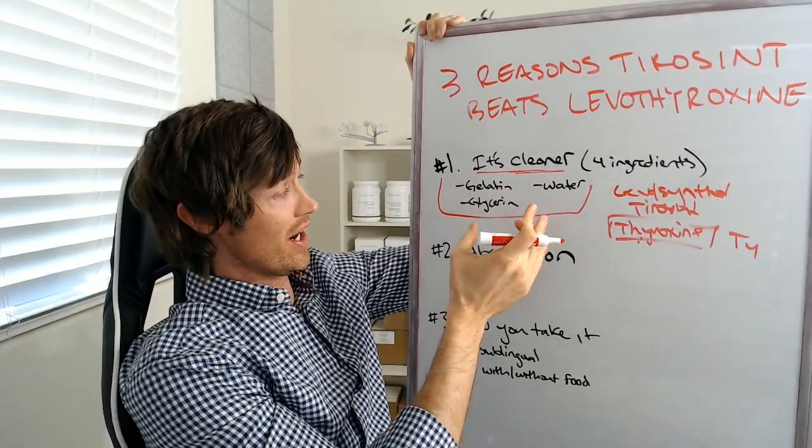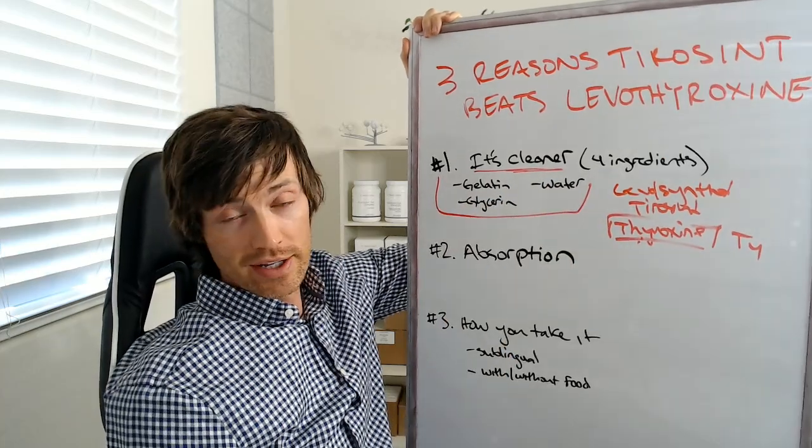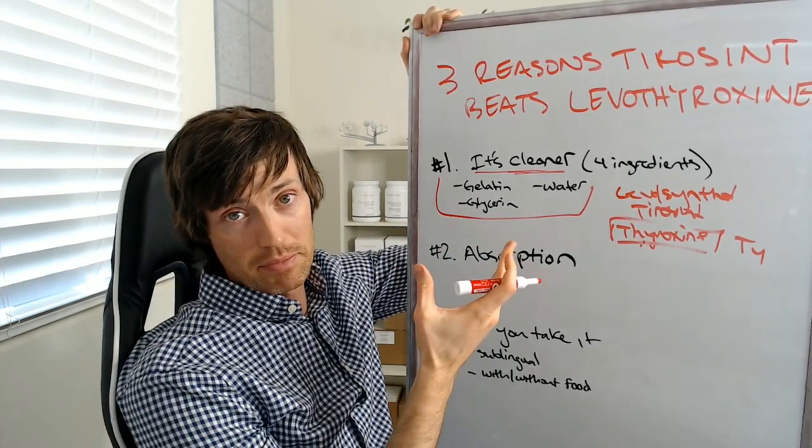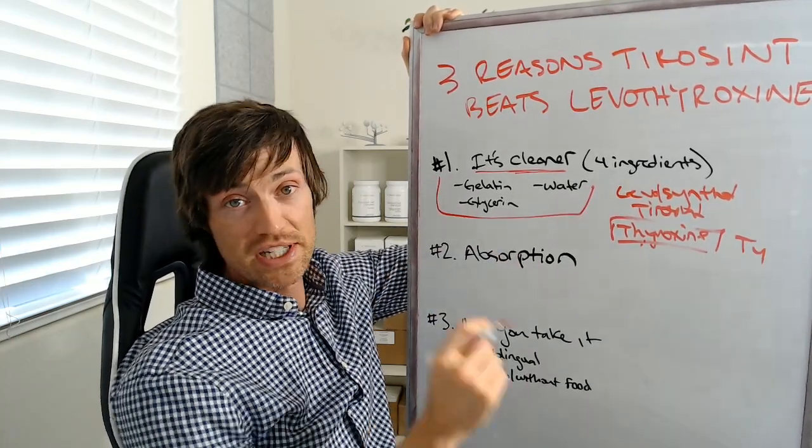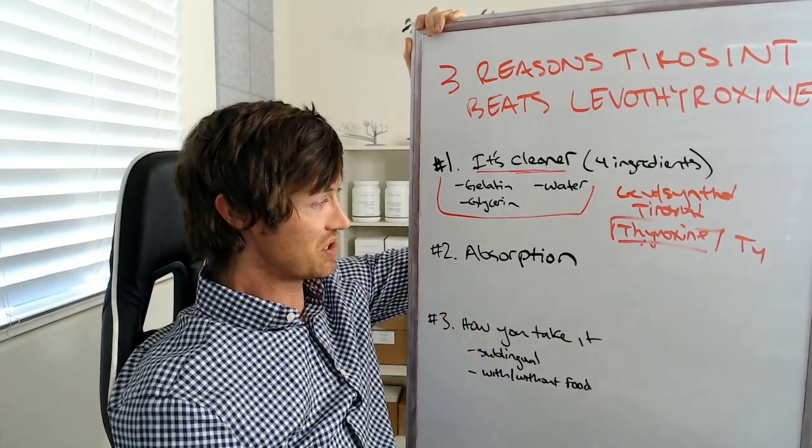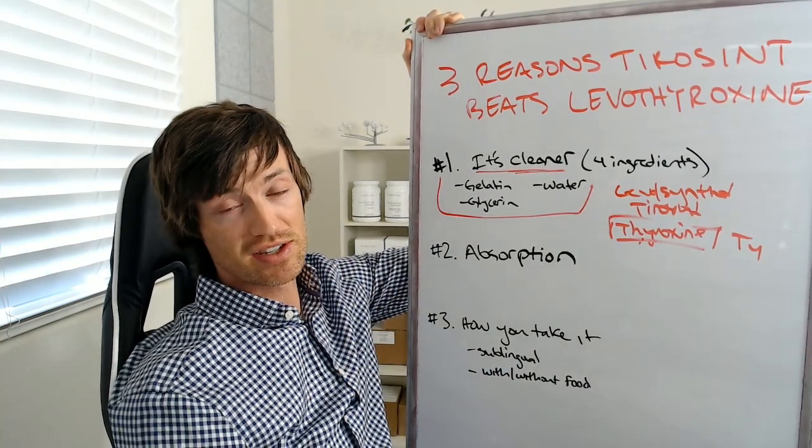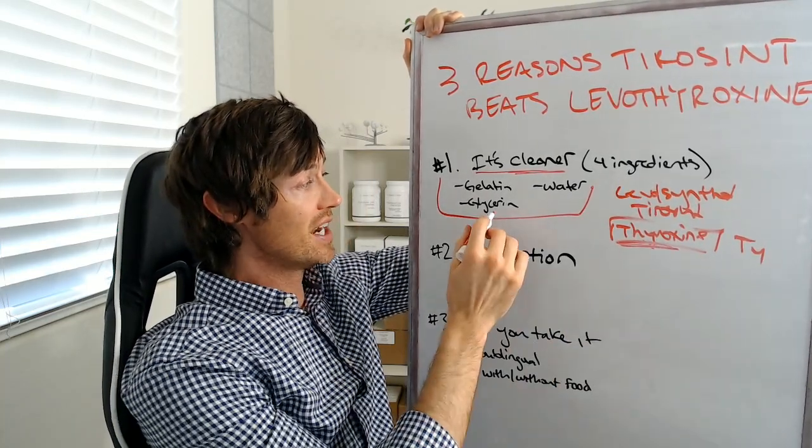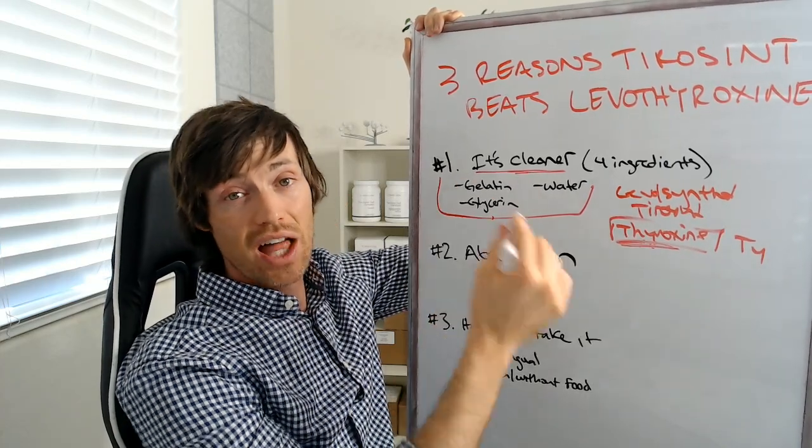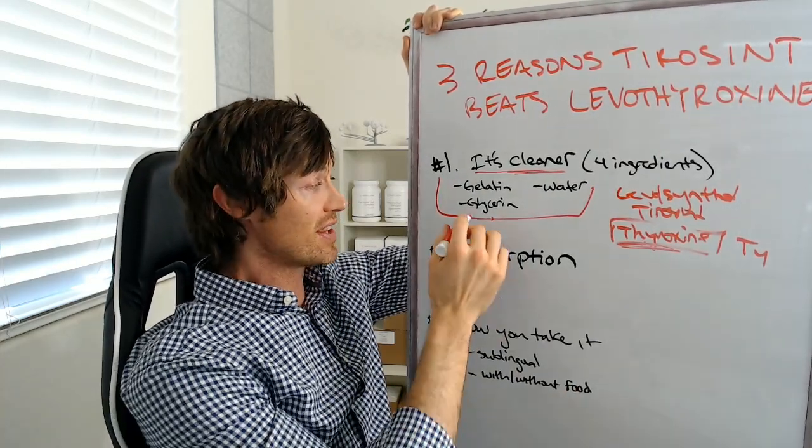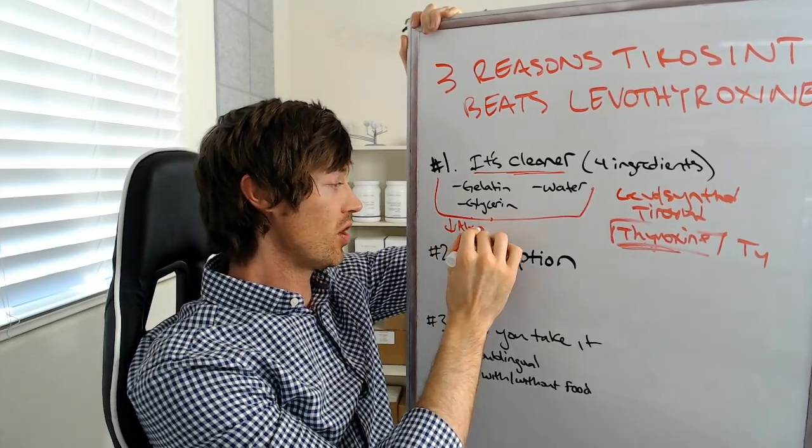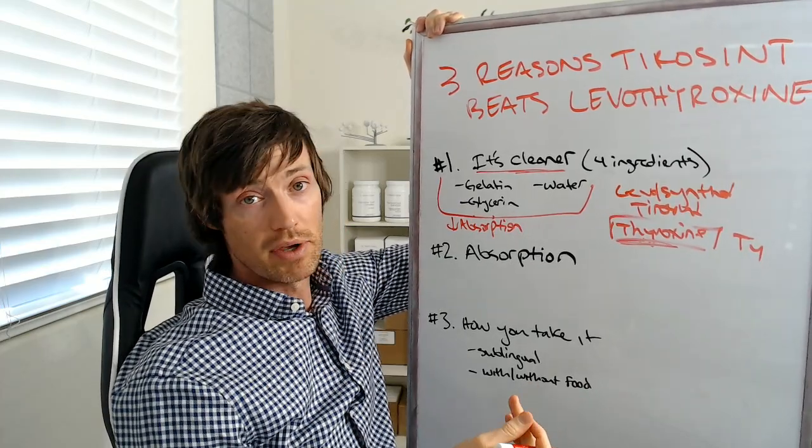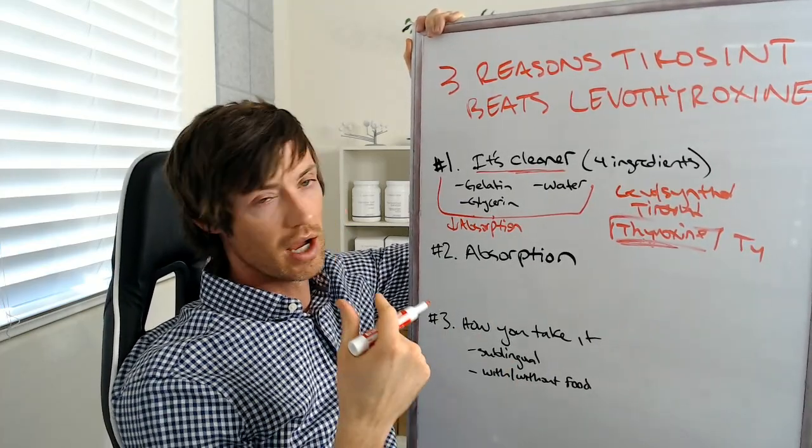The inactive ingredients are listed right here. It's got gelatin, glycerin, and water. Now, if you're somebody who doesn't pay attention to inactive ingredients in medications, especially thyroid medications, then this might not mean a lot to you. But if you've ever seen the list of inactive ingredients in Levothyroxine, it will mean a lot to you because there are a ton of different ingredients all located inside of Levothyroxine in addition to the thyroxine component. It is these inactive ingredients which can cause a lot of problems for thyroid patients. In fact, these inactive ingredients can decrease absorption. They can also cause problems themselves, including things like rashes, headaches, upset stomach, and so on.